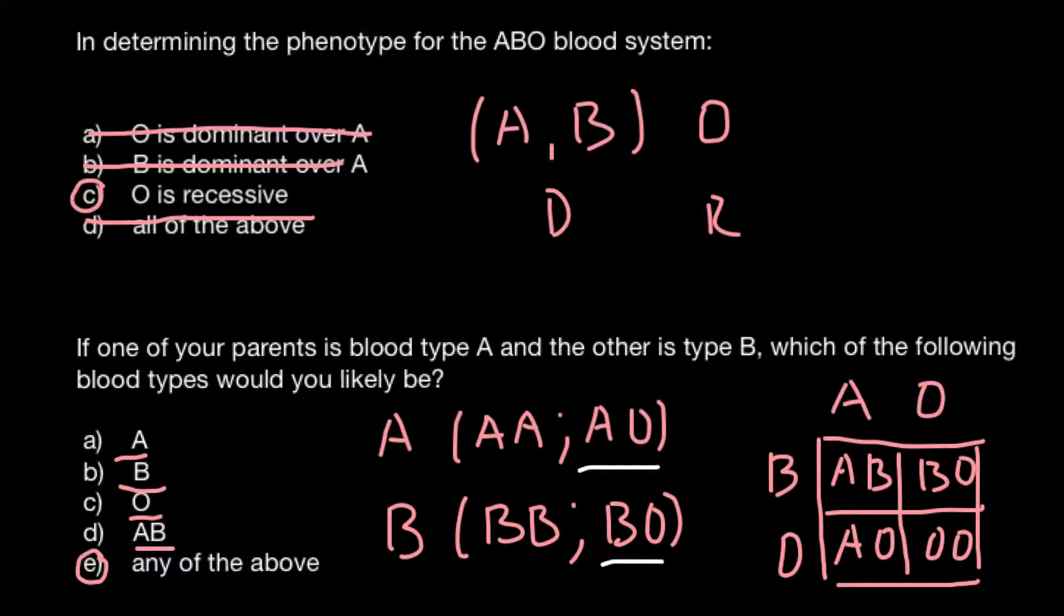So as you see, the correct answer would be E, any of the above. Two parents who phenotypically belong to blood group A and blood group B - we are not told here what is the genotype, so we can assume the genotype that can produce maximum number of variants in the progeny. So these two blood groups can produce four blood groups, and as you see, the correct answer would be E.